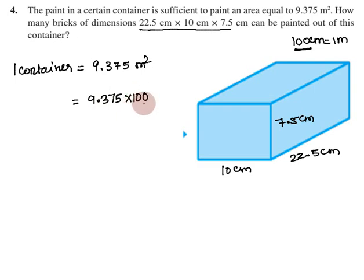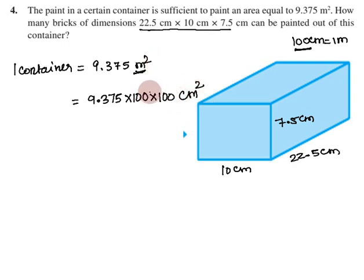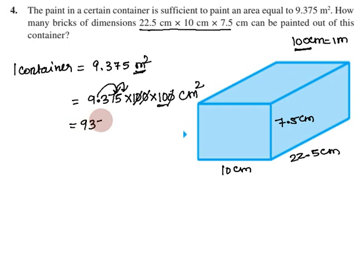To convert square meters to square centimeters, we multiply by 100 × 100, which is 10,000. So 9.375 square meters multiplied by 10,000 gives us 93,750 square centimeters. This is the total area that one container of paint can cover.